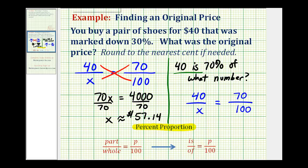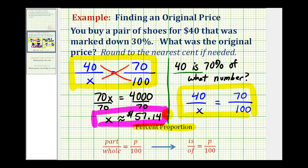So the main connection to make here is that notice how this proportion here, using keywords, is the same proportion we had here using our problem-solving skills. Either way, the original price is going to be $57.14. I hope you found this helpful.